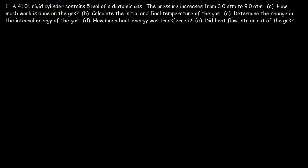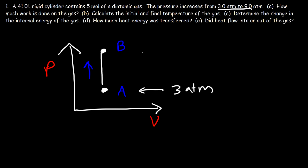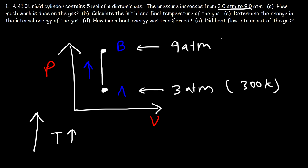Now let's draw a PV diagram for an isochoric process. On the y-axis we have pressure; on the x-axis, volume. For an isochoric process the volume is constant, so we only move up or down — not left or right. The pressure is increasing, so we go upward from point A to point B. At A the pressure is 3 atm and temperature is 300 K; at B the pressure is 9 atm and temperature is 900 K.